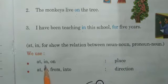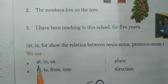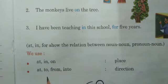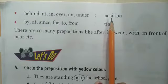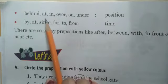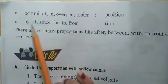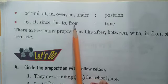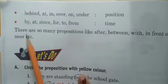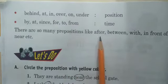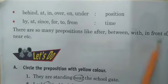Now we use at, in, on for place. For direction we use to, from, into. For position: behind, at, in, over, on, under. And for time: by, at, since, for, to, from. There are so many prepositions like after, between, with, in front of, near, etc.